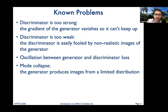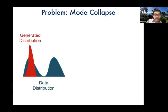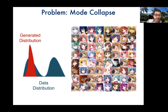There's also an interesting phenomenon called mode collapse, where the generator produces images from only a very limited distribution. Normally you have a broad data distribution, but the GAN gets limited to a very narrow sub-distribution. In this example, the GAN produced anime faces that all look very much alike.